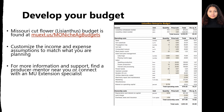The Missouri cut flower Lysianthus budget can be found at muext.us/moniche-ag-budgets. Make sure to customize the income and expense assumptions in these budgets for what you are planning in your region. For more information and support, it is advised to connect with an existing cut flower producer near you or connect with an MU Extension Specialist in your county. Thank you for joining us for today's presentation.